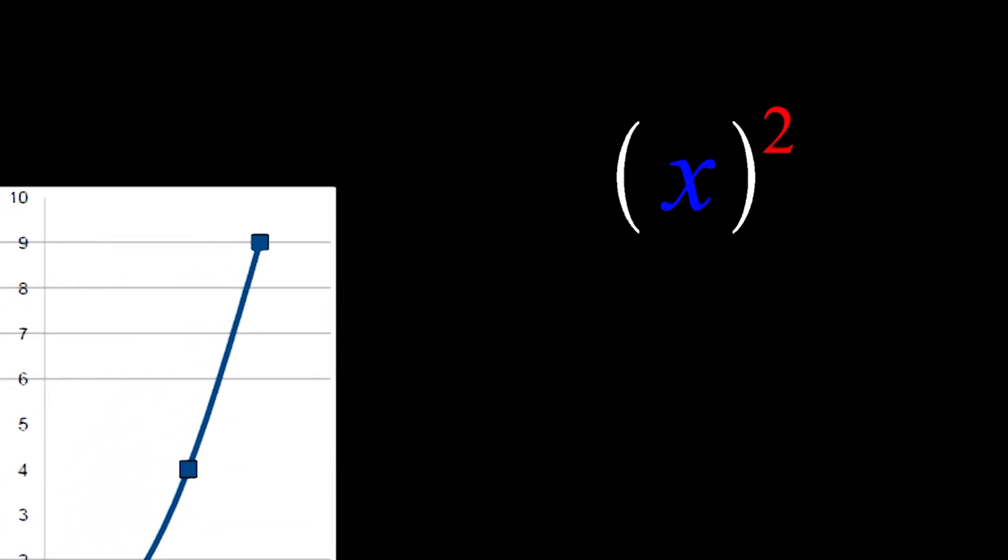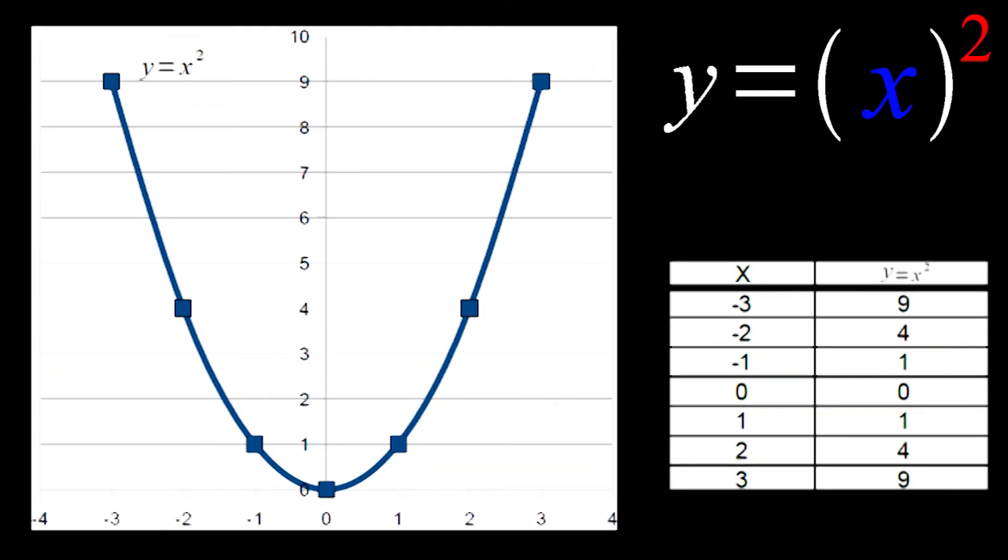After all, we know what y equals x squared looks like. It's simply a parabola with its vertex located at the origin. Using that x squared as a starting point,